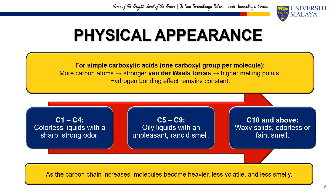The first few members of carboxylic acids — methanoic acid, ethanoic acid, propanoic acid, and butanoic acid — are colourless liquids with a strong, sharp odour. As the carbon chain gets longer, they become waxy solids with little to no smell. This is mainly due to van der Waals forces. As the carbon chain increases, these forces get stronger, leading to a higher melting point — that's why short-chain acids are liquids, but longer-chain ones become solids.